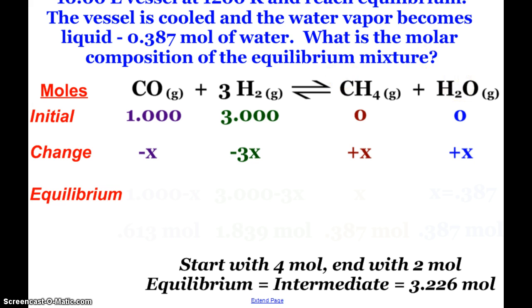So what I say at equilibrium, my carbon monoxide is 1 minus x, my hydrogen is 3 minus 3x, and my methane is x. Well, so is water. Water is x, but it told me 0.387 moles of water.